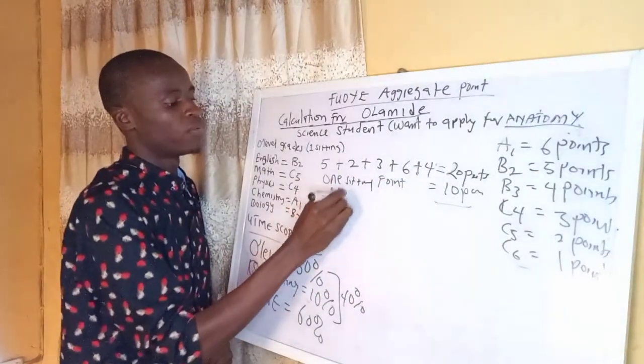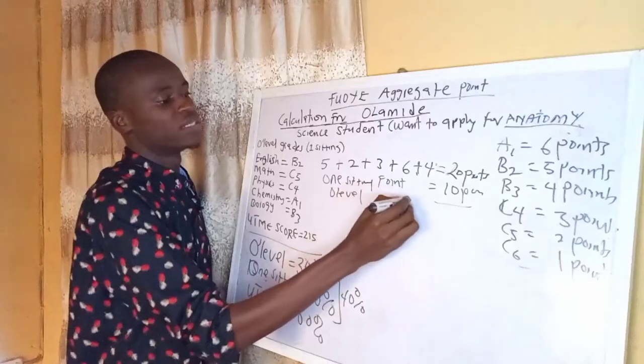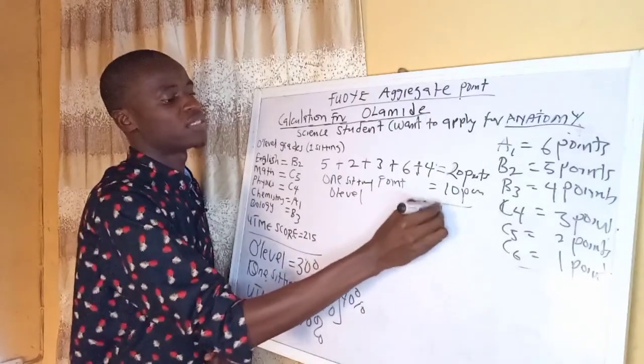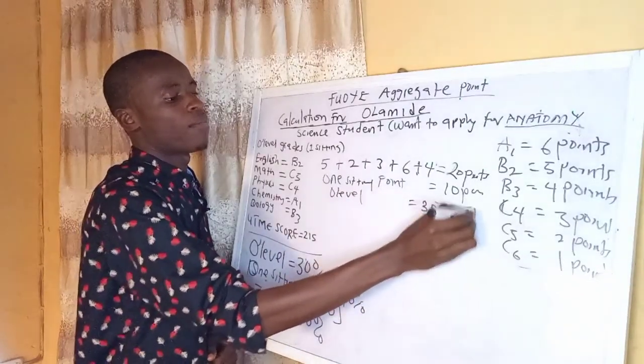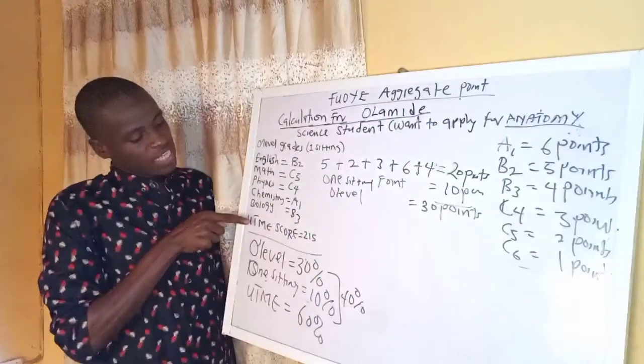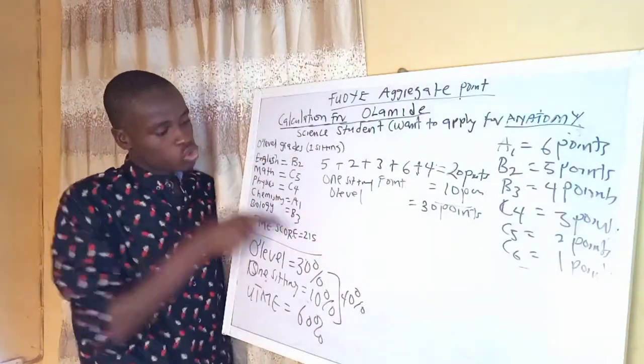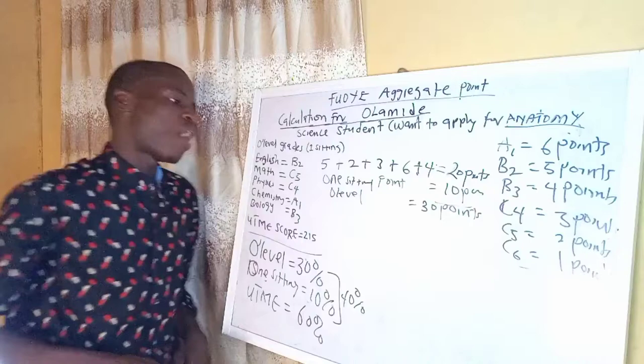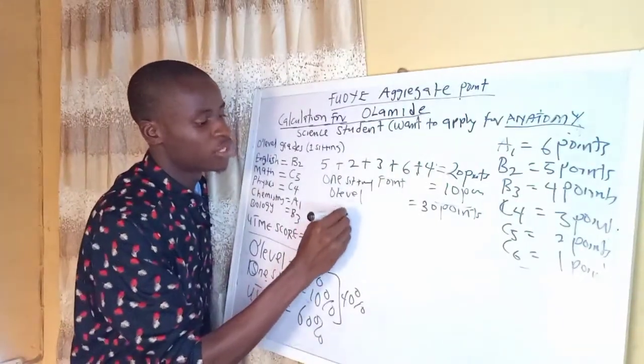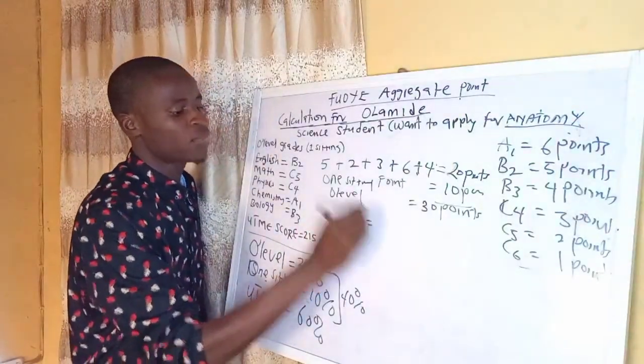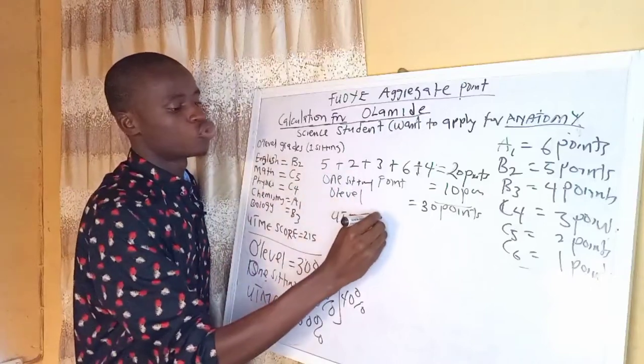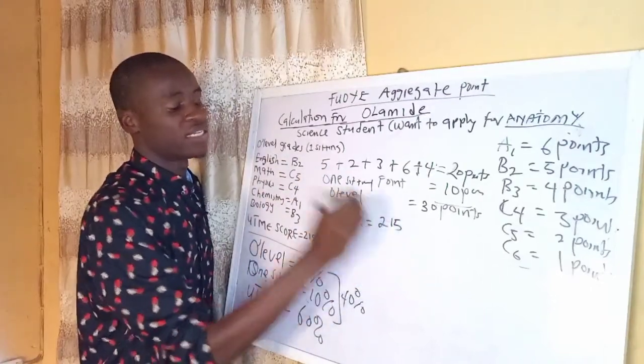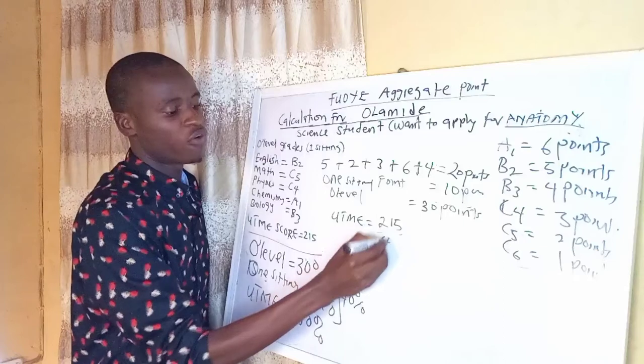20 points. Now because he is having one sitting, he has 10 points for O-level. Generally for O-level, he is having 30 points. For UTME, Olamide scored 215. Now how do you calculate that for the UTME?